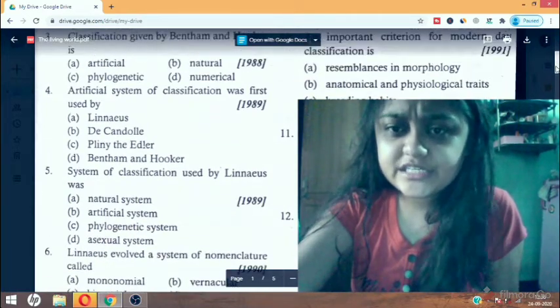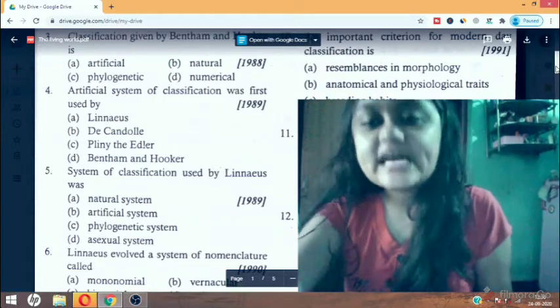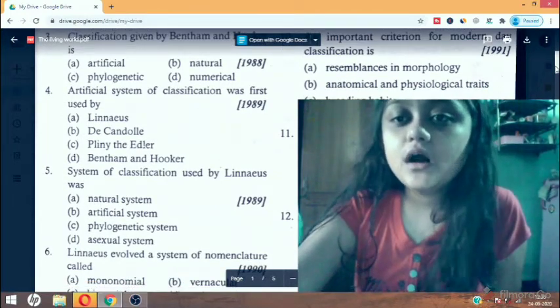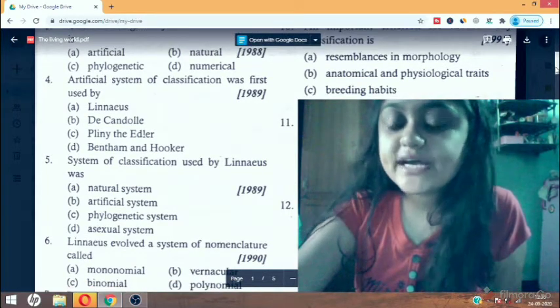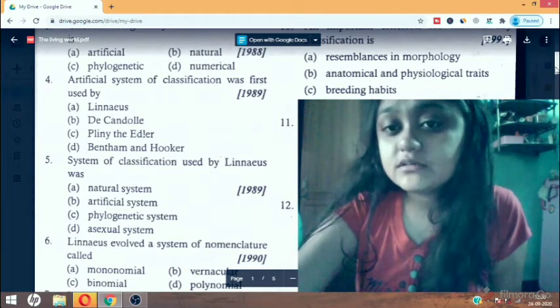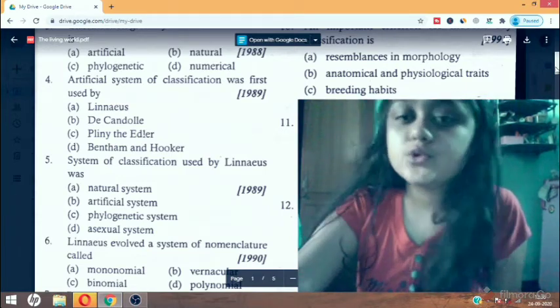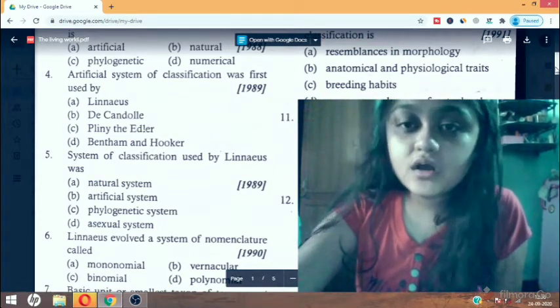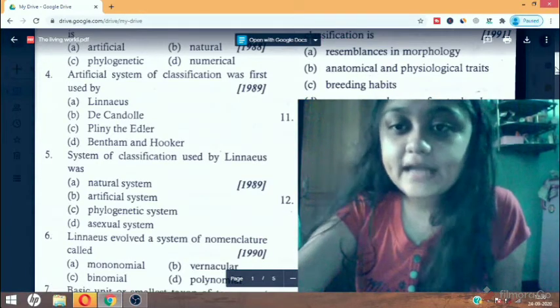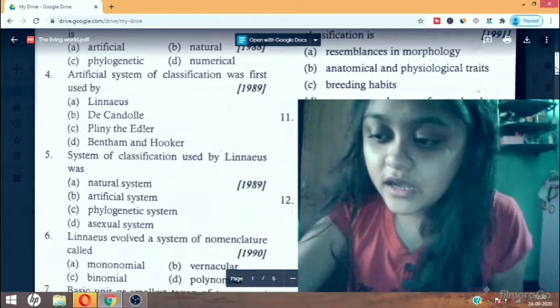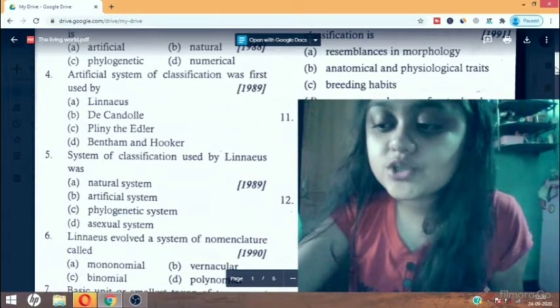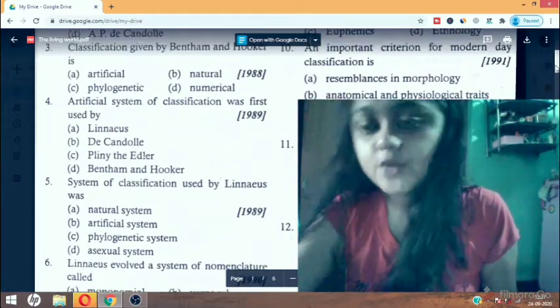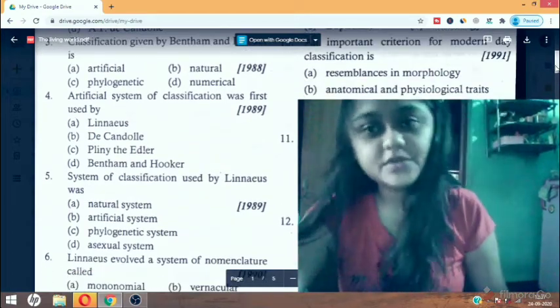Tenth question: this comes in the year 1991 - important criterion for modern day classification is. The answer is anatomical and physiological traits. Modern day classification, new systematics or biosystematics is based on different studies - physiology, ecology, anatomy, biochemistry, cytology.